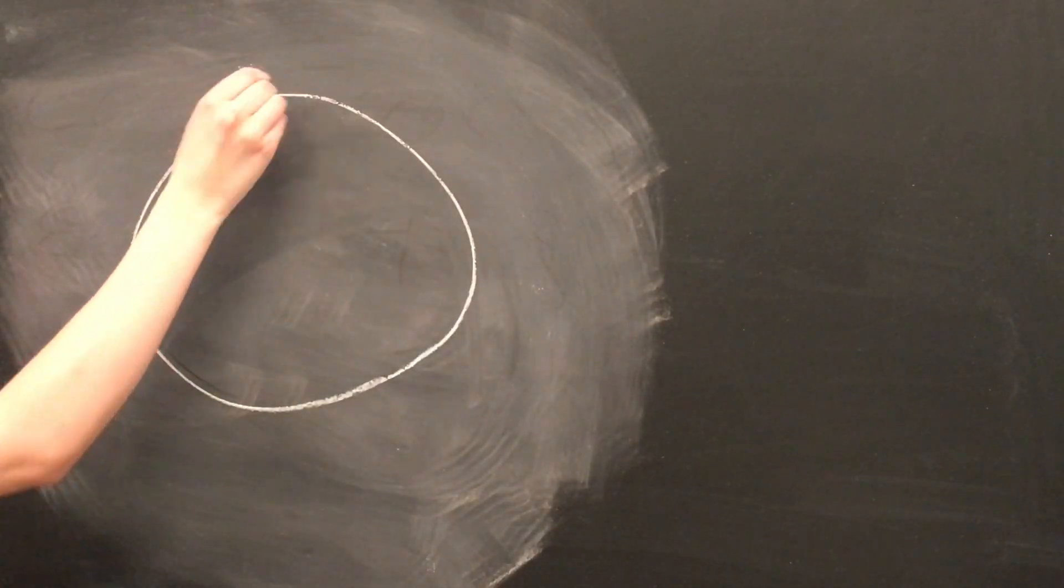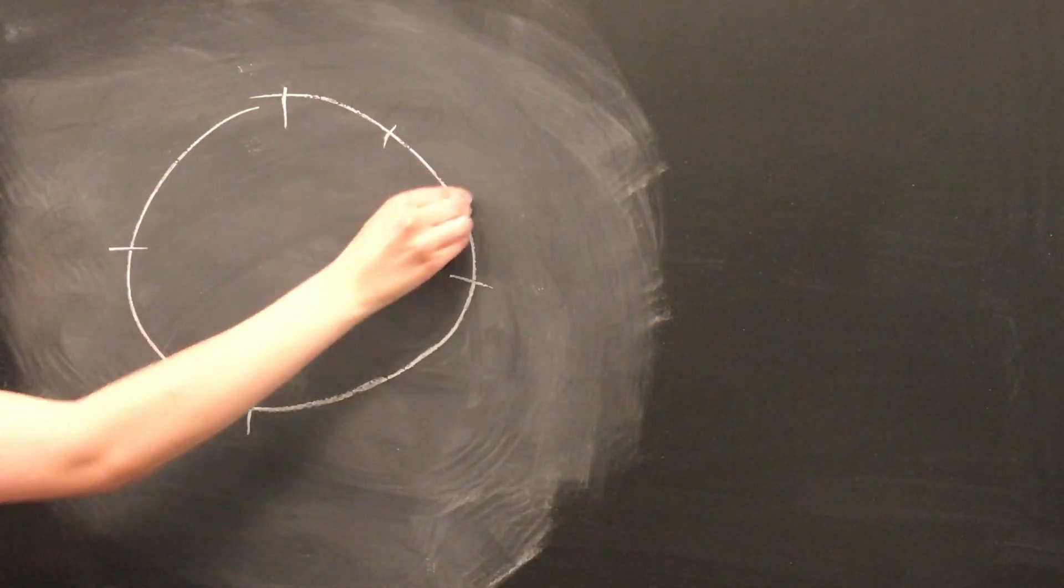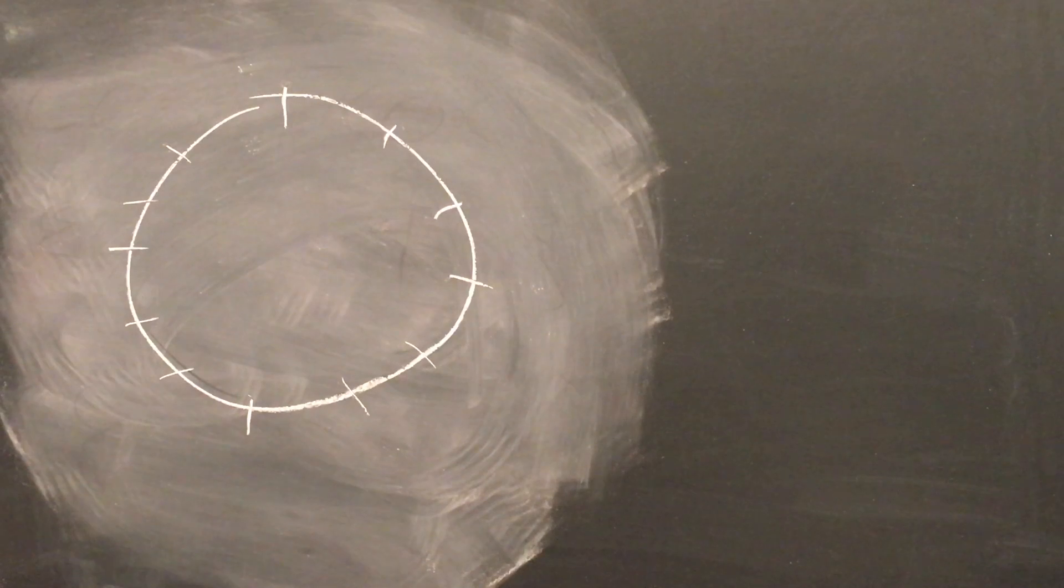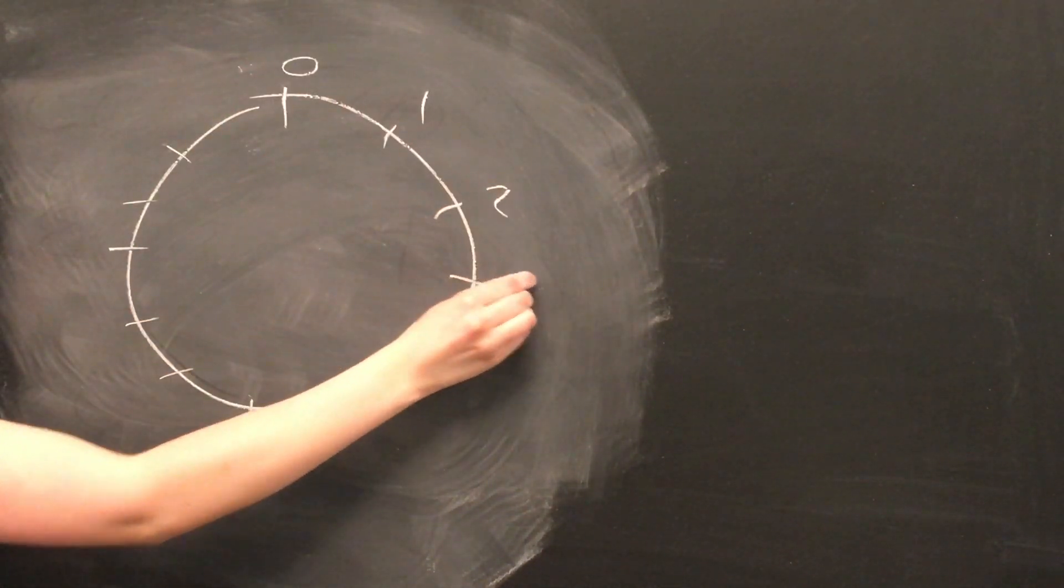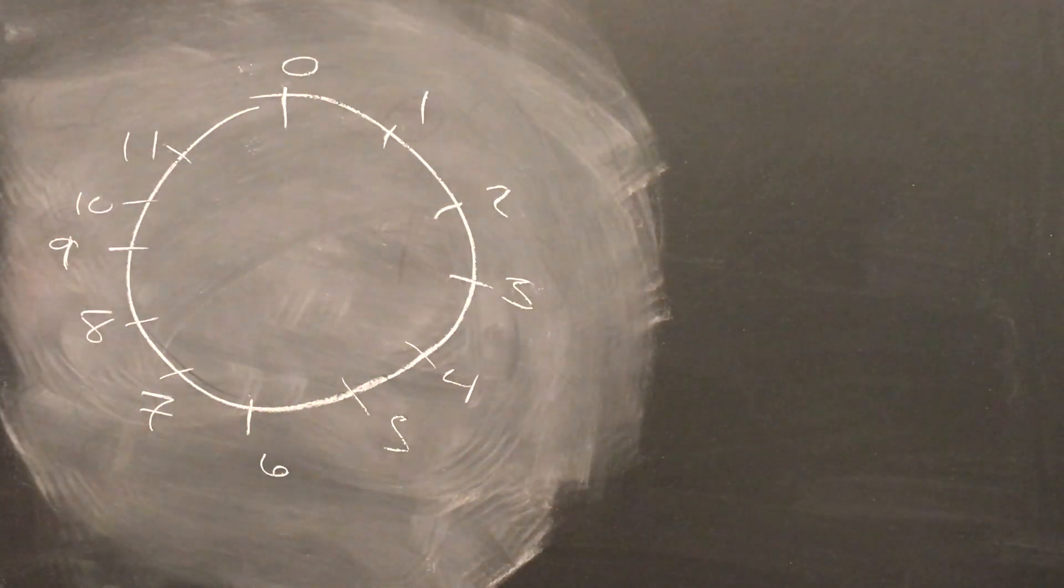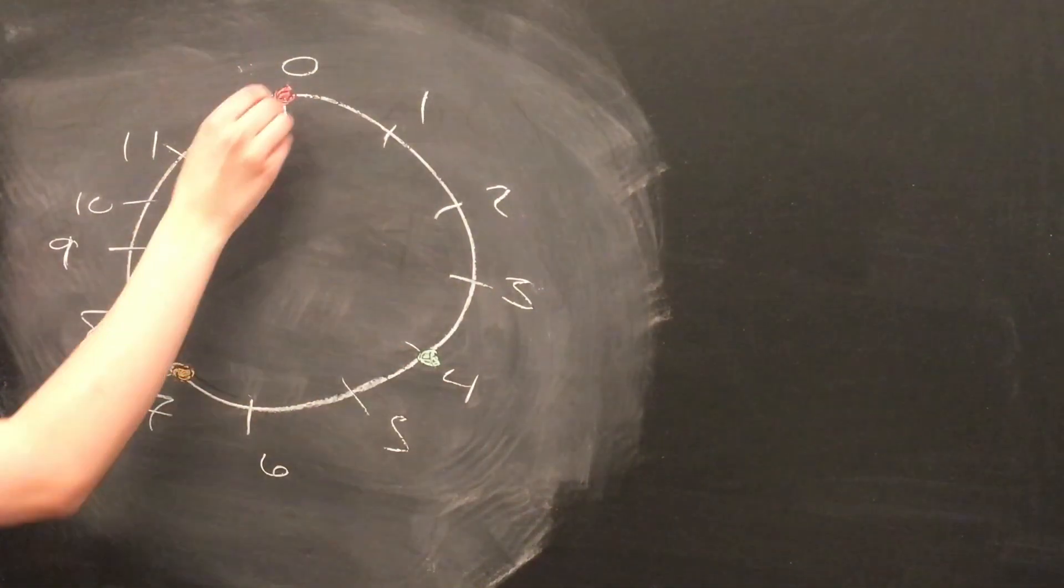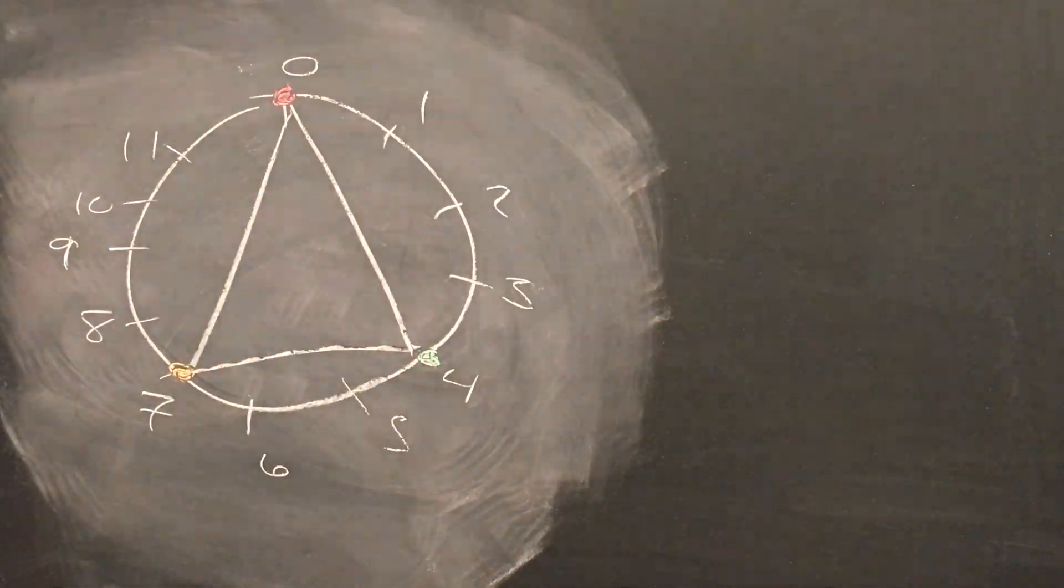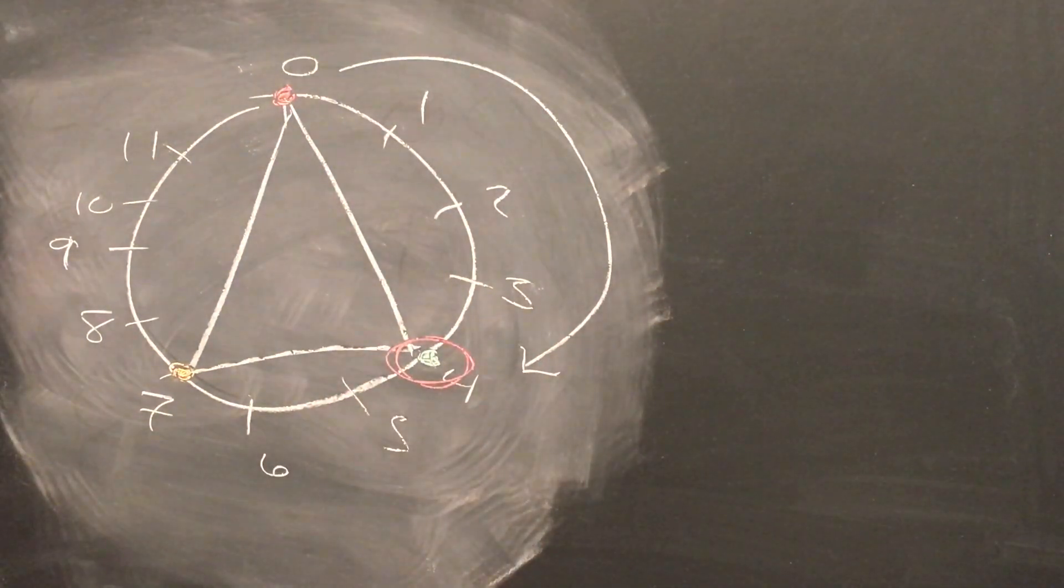So what does this have to do with the pitch class circle? Well, first, let's plot the C major triad. It looks something like this. Now let's transpose it to an E major triad. We can do this by just rotating all our points on the circle clockwise by 4 notches on a circle, or counterclockwise 8 notches.